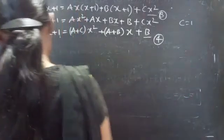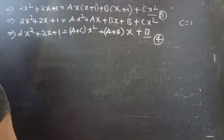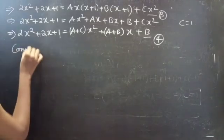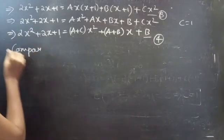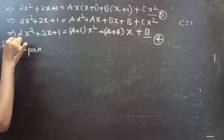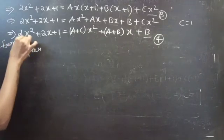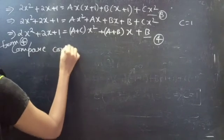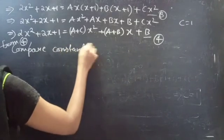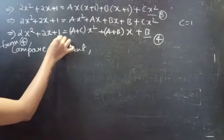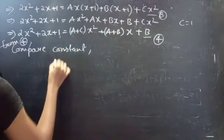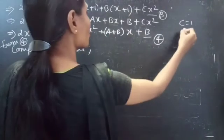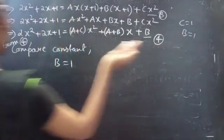Now from equation 4, compare the constant terms. You get 1 equals b, so b equals 1.